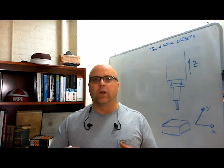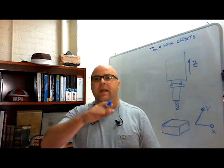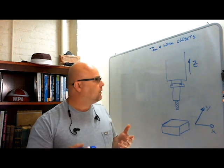In CNC machining, the tool and work offsets allow the machine to know where the workpiece is and know how long and what the diameter of the tools are. It's actually really pretty simple.